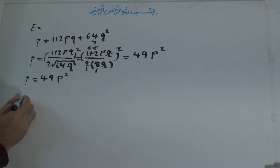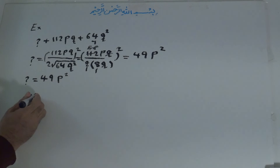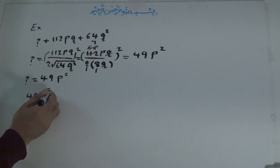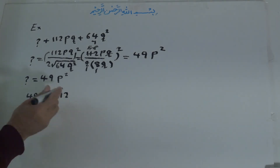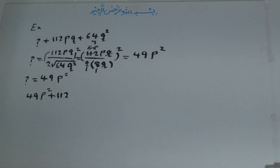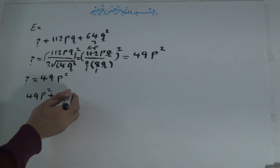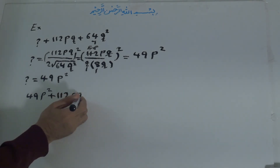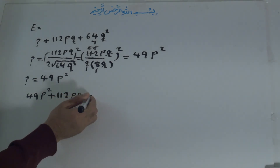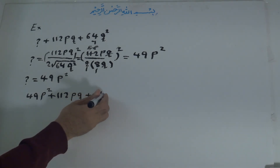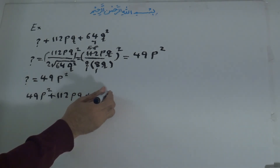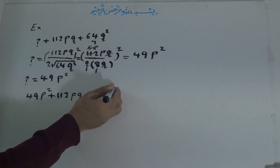The question mark is equal to 49p squared. It means that our complete expression is 49p squared, plus 112pq, plus 64q squared.